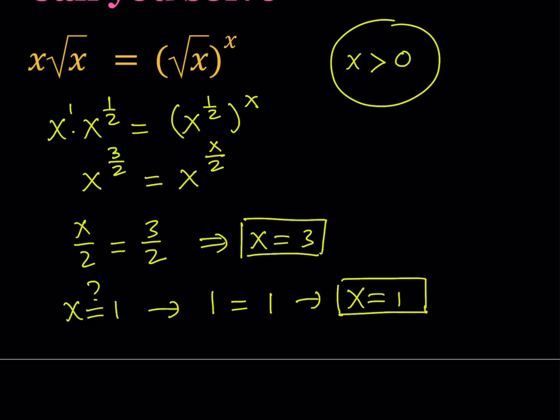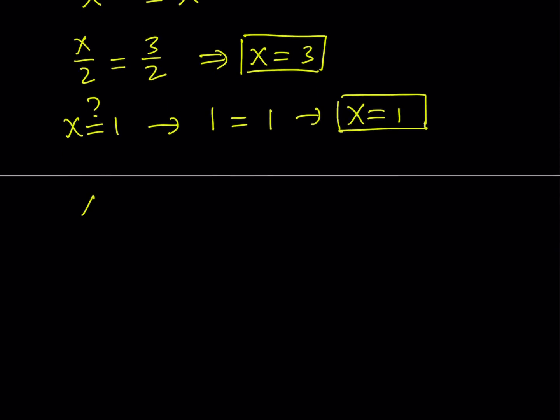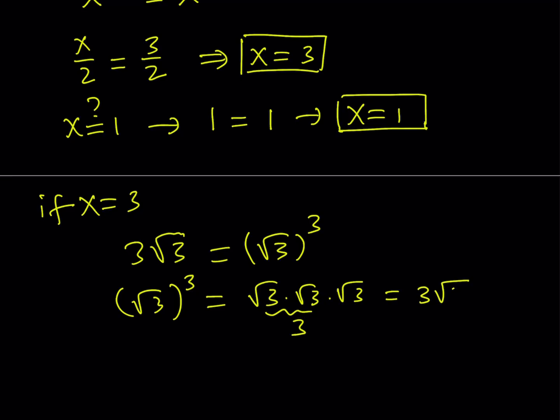Let's go ahead and check out 3. What happens if x is equal to 3? We get something like this. If x is equal to 3, then we get 3 root 3 equals root 3 to the power 3. And as you know, this is true. Because if you take root 3 and cube it, you basically get root 3 times root 3 times root 3. And root 3 times root 3 is equal to 3. Therefore, the answer becomes 3 root 3. So x equals 3 definitely works. So x equals 1 also works.